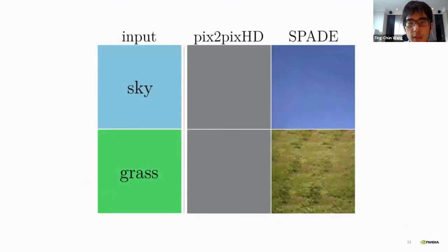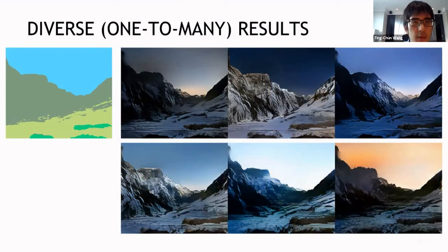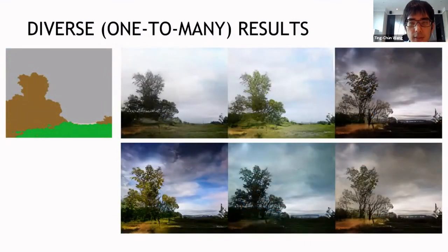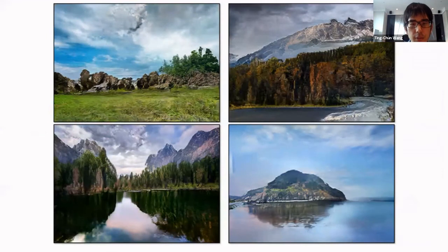Recall these results that we've seen earlier. The Pix2PixHD cannot generate reasonable results because the semantic information is washed away. We apply the same example using a SPADE generator. And you can see that now we can generate reasonable outputs that correspond to the input semantic labels. Here are some examples for one-to-many synthesis. Given the same input semantic label, we can generate diverse outputs, as shown here. And here's another example. You can see that we can generate diverse styles using the same input image. And here are some more example results that's generated by our method.